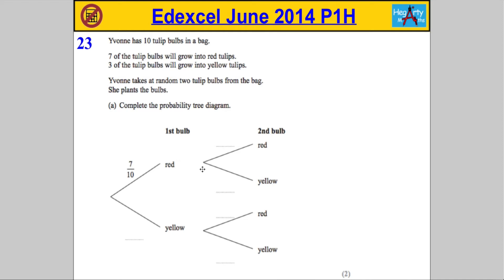Question 23. Yvonne has 10 tulip bulbs in a bag. 7 of the tulip bulbs will grow into red tulips, 3 will grow into yellow tulips. Yvonne will take, at random, 2 tulips from the bag and she's going to plant them. We're asked to complete the probability tree diagram.